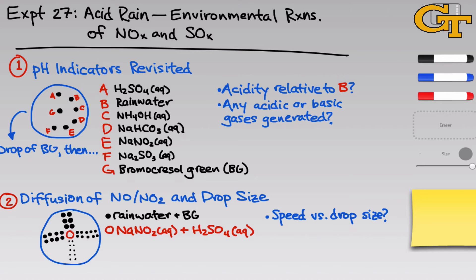Here, we're interested in the speed of diffusion of the gases as a function of drop size, with an eye on the idea that raindrops and cloud droplets and fog droplets are different sizes, and the diffusion of pollutant gases like NOx through these droplets might be different as a result of their different size.